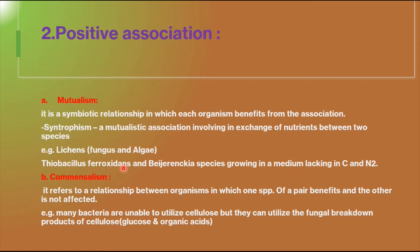Similarly, lichens — which consist of fungus and algae — both supply moisture content and food materials to each other. Another example is endomycorrhiza, a fungi having a relationship with wheat plants, supplying nutrients to the plant while drawing carbohydrates from it.